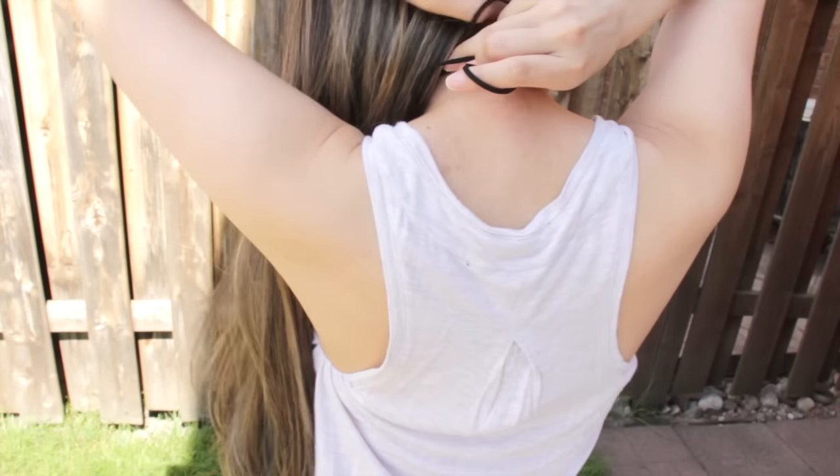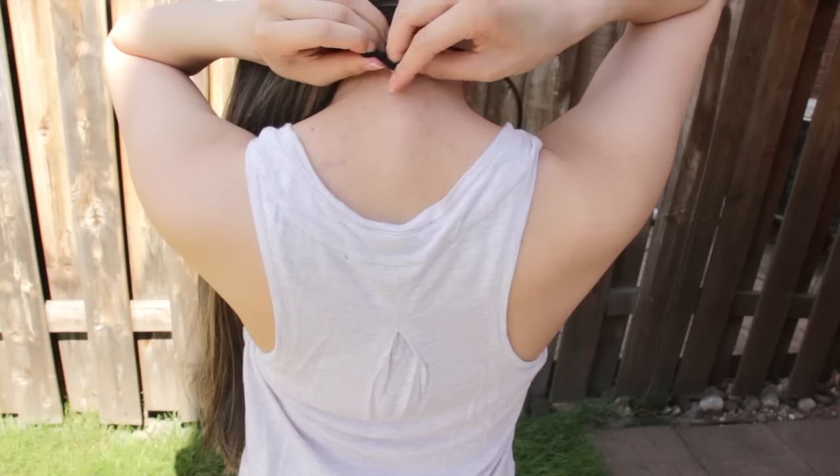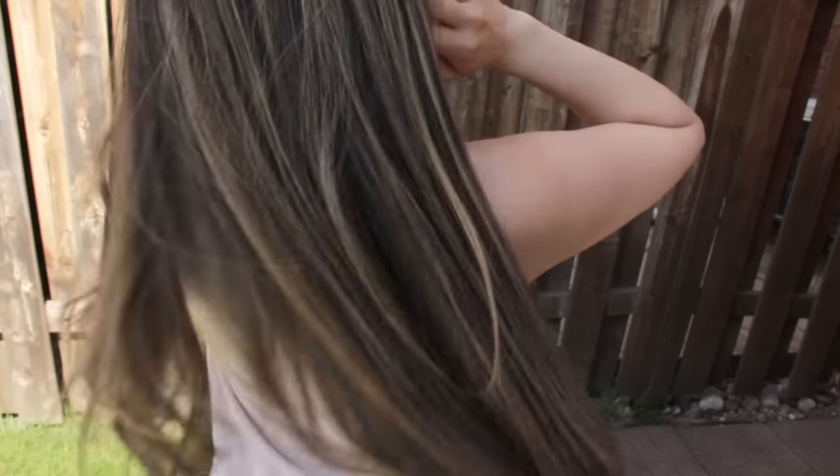Putting this choker around is super simple. If you know how to tie your shoelaces, you know how to put this on. Just put it around your neck, and then just tie a little knot at the back.